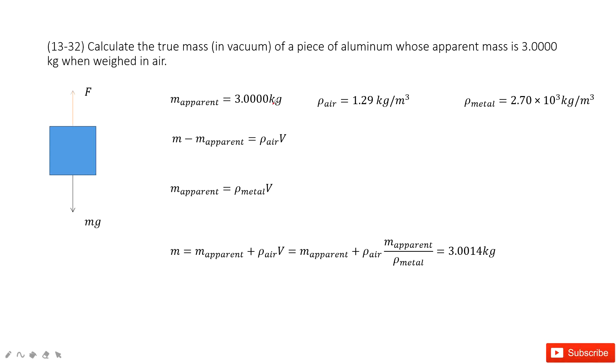In this case, we need to calculate the true mass of the aluminum, this aluminum. The apparent mass is just 3 kilograms in the air, right?